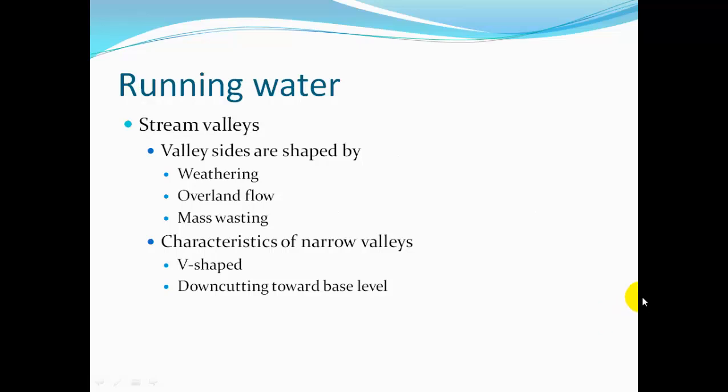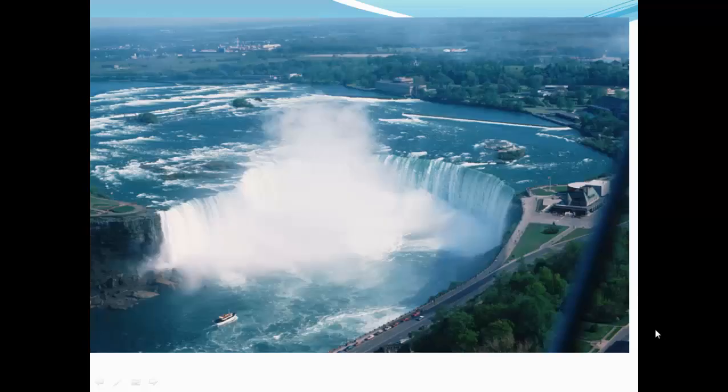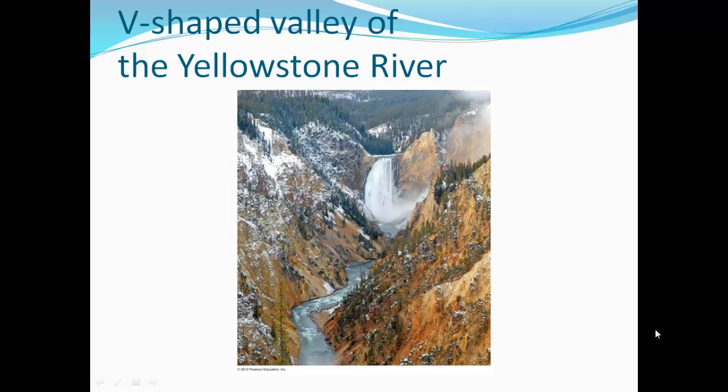Stream valleys — valley sides are shaped by weathering, overland flow, and mass wasting. Narrow valleys tend to be V-shaped and are down-cutting toward base level. These narrow valleys may often have rapids and waterfalls — for example, Kent Falls State Park, Niagara Falls, and the Yellowstone River with its waterfall and rapids.